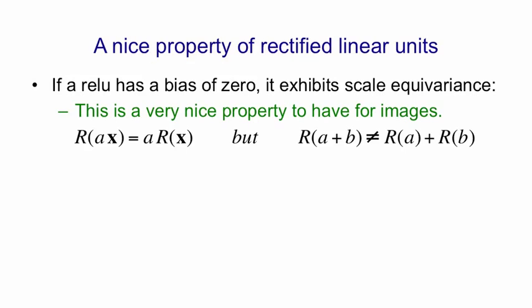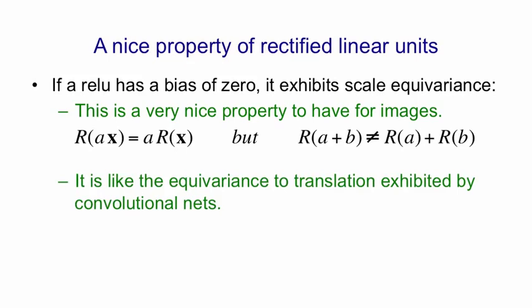This property of scale equivariance is quite similar to the property of translational equivariance that convolutional nets have. So if we ignore the pooling for now, in a convolutional net, if we shift an image and look at the representation, the representation of a shifted image is just a shifted version of the representation of the unshifted image. So in a convolutional net without pooling, translations of the input just flow through the layers of the net without really affecting anything. The representation of every layer is just translated.